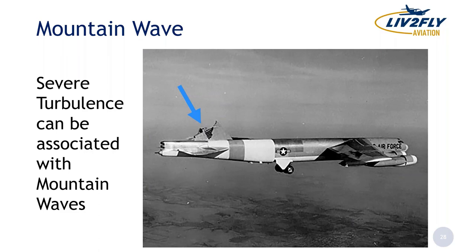This was a very interesting shot — you can get some severe turbulence. This was a B-52 being used for research and it lost most of its vertical stabilizer flying through and examining mountain waves. Fortunately it was able to land safely, but there was a great amount of aircraft damage.